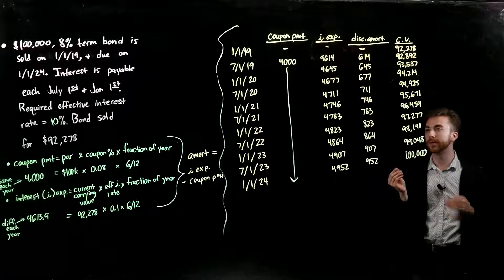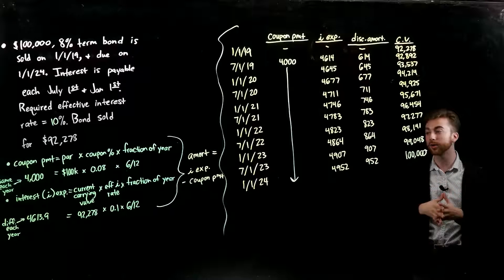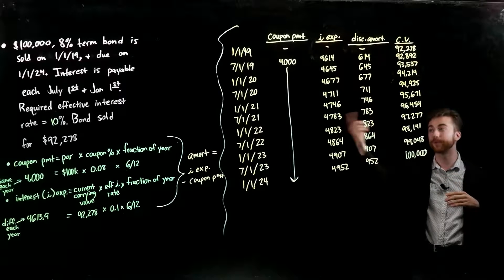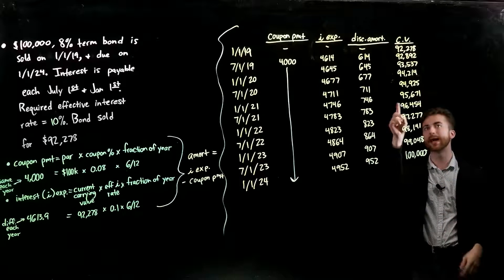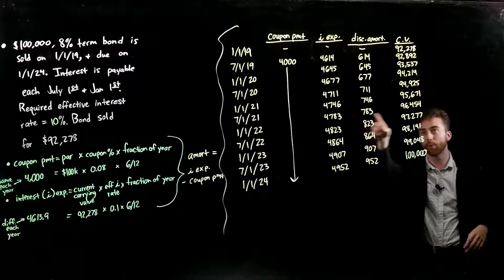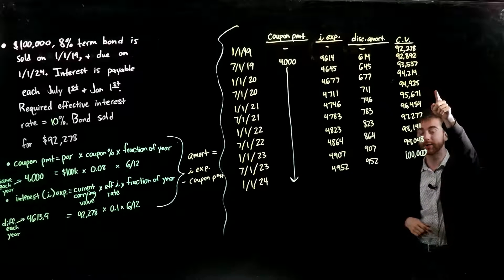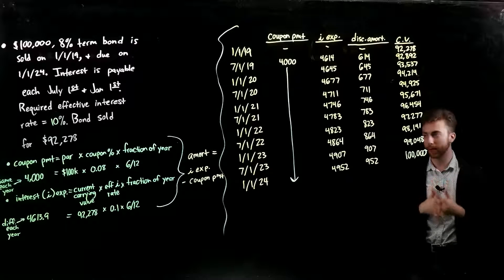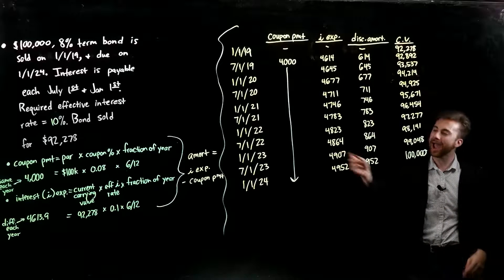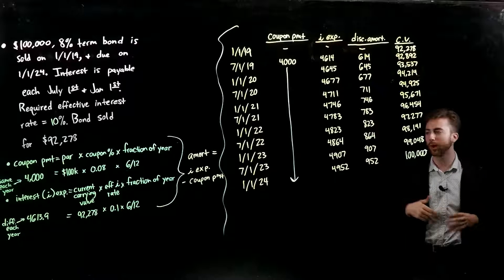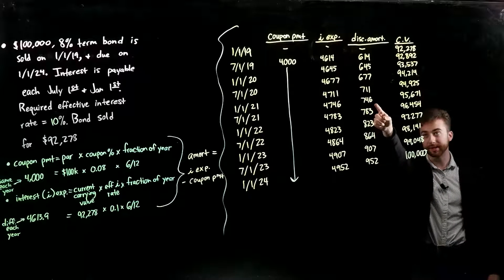The interest expense is going to change every year. Here's how you find it for each period: take whatever the current carrying value of your bond is — when we first purchase it for $92,278, that is the carrying value on 1-1-19. So for 7-1-19, you take the current carrying value of $92,278, multiply by the effective interest rate of 10%, and again multiply by 6/12 since we're dealing with semi-annual periods. That gives us $4,613.90, which I rounded up to $4,614.